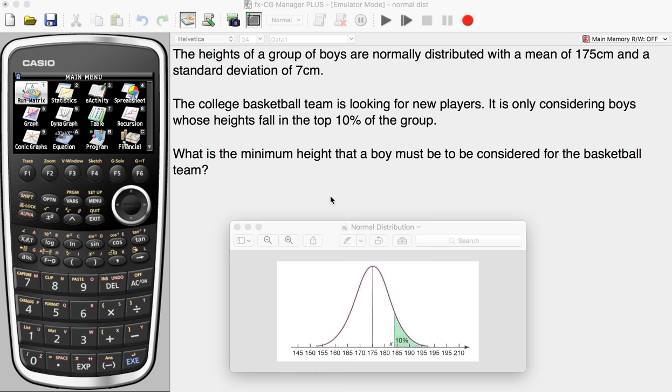This video will show you how to use your Casio GDC to find a certain score, or in this case height, given a probability or percentage.